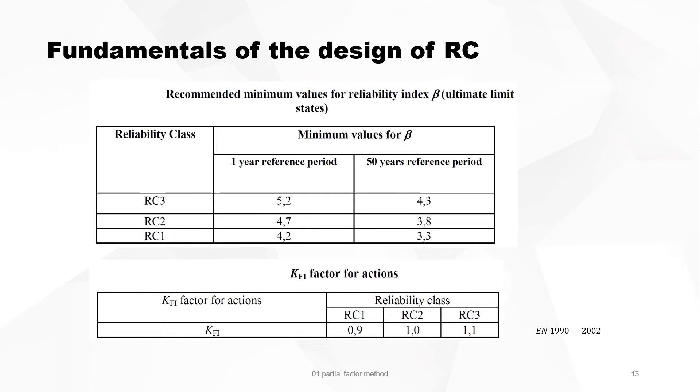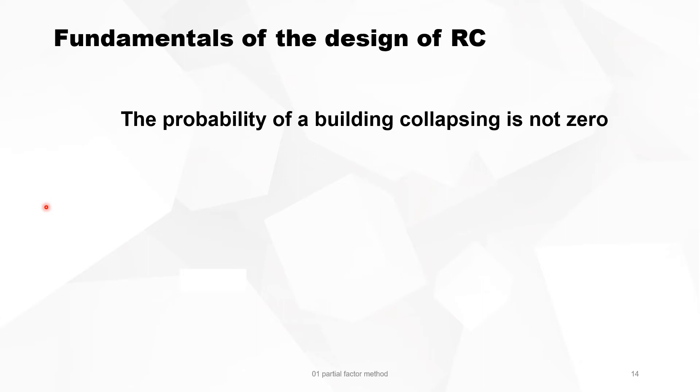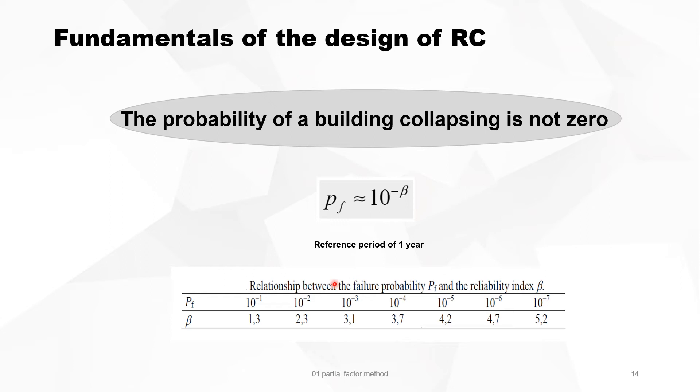So we learned that the probability of a building collapsing is not zero. Now the probability is more or less 10 to the power minus beta, with beta the reliability index. It's just a rule of thumb, easy to remember. But the proper table where there is the connection between reliability index and probability index is shown here.